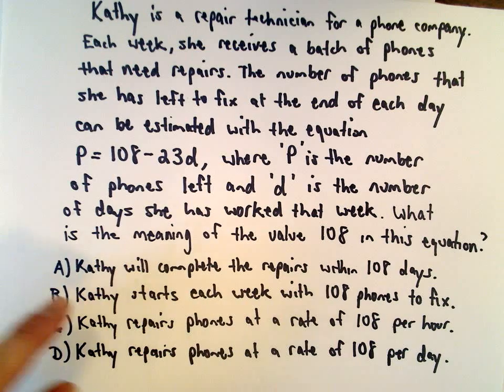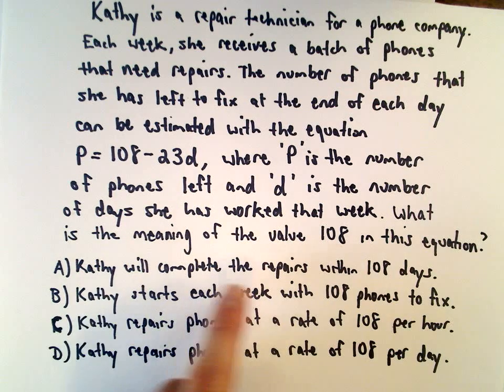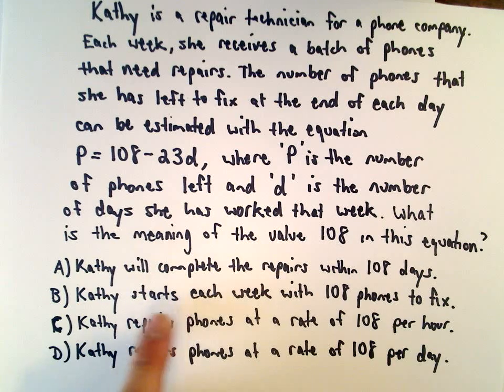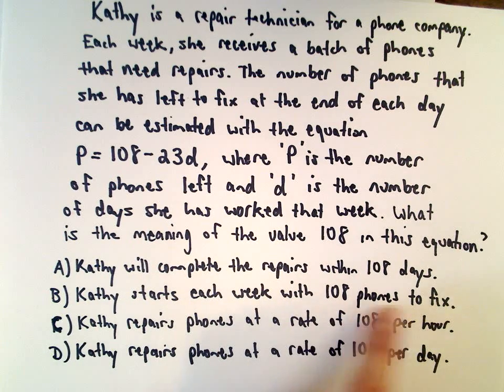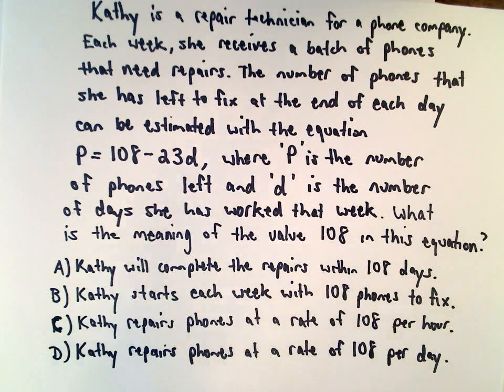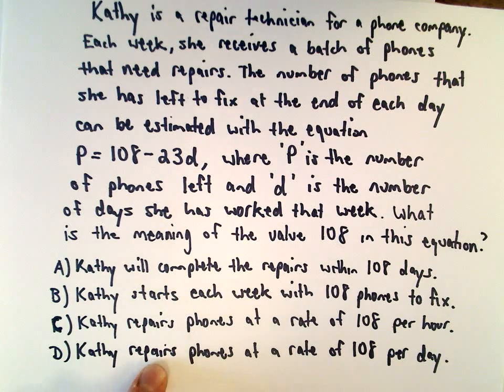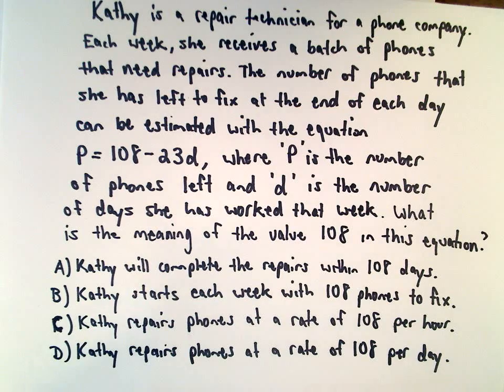We've got four choices. Answer choice A says Kathy will complete the repairs within 108 days. B says Kathy starts each week with 108 phones to fix. C says Kathy repairs phones at a rate of 108 per hour. D says Kathy repairs phones at a rate of 108 per day.